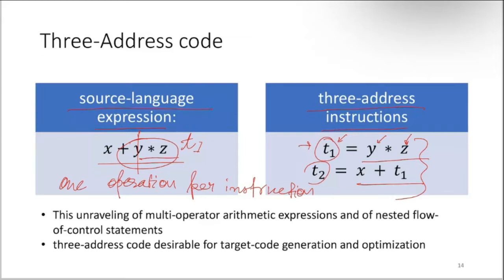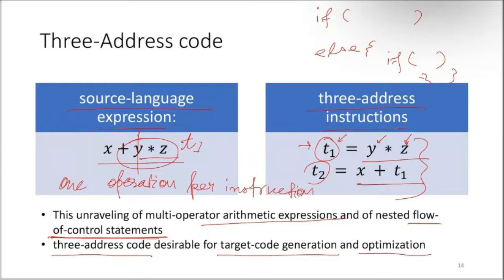This unraveling of multi-operator arithmetic expressions and nested flow-of-control statements is important. For nested statements, like if-then inside if-then-else, you may have nested structures. This simplification can be done easily using three-address code, which is desirable for target code generation and optimization.